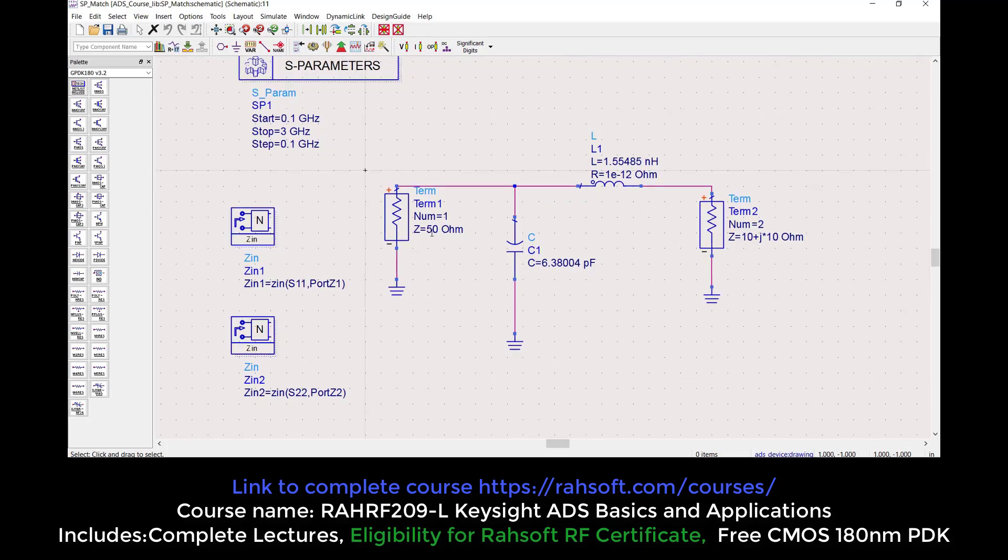Here I have 50 ohms and the load is 10 plus J10. The real part is 10 and the imaginary part is 10 as well. With this circuit, I'm going to match the load to 50 ohms. My source is 50, this is my load, and this is my matching circuit in between.